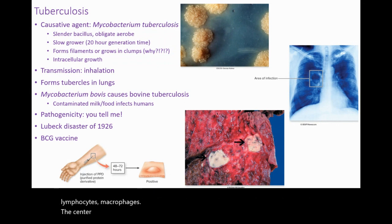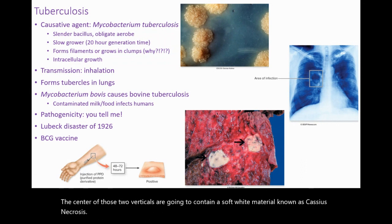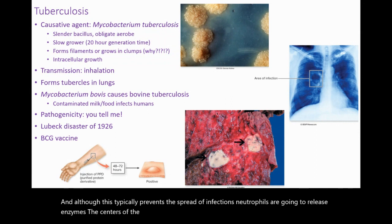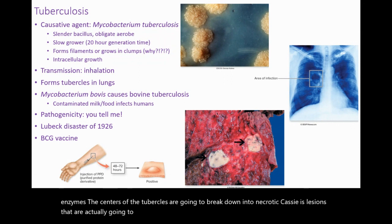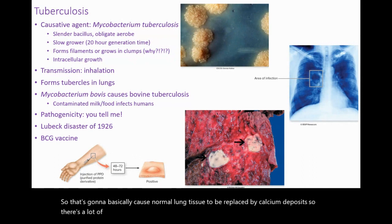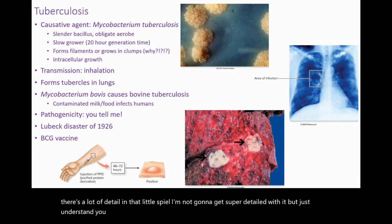The center of those tubercles contains a soft white material known as casseous necrosis. Although this typically prevents the spread of infection, neutrophils release enzymes and the centers of the tubercles break down into necrotic casseous lesions that heal by calcification. This causes normal lung tissue to be replaced by calcium deposits. Just understand what tubercles are and how lung tissue is replaced by calcium deposits.